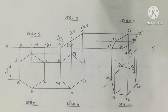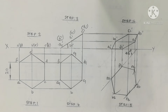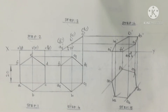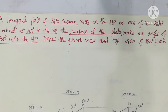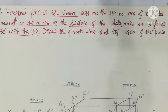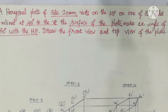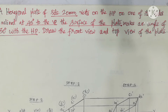Projection of Planes. Consider a question regarding the projection of planes. An external plate of side 20mm rests on the HP on one of its sides, inclined at 45 degrees to the VP. The surface of the plate makes an angle of 30 degrees with the HP. Draw the front view and top view of the plate.